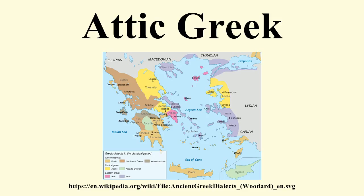Phonology: Vowels. Proto-Greek long A became Attic long E, but remains as Ionic E in all positions, and as Doric and Aeolic A in all positions. Proto-Greek 'mater' became Attic 'meter' (mother); Attic 'chora' versus Ionic 'chora' (place, country). Proto-Greek long A after W was deleted by the classical period.